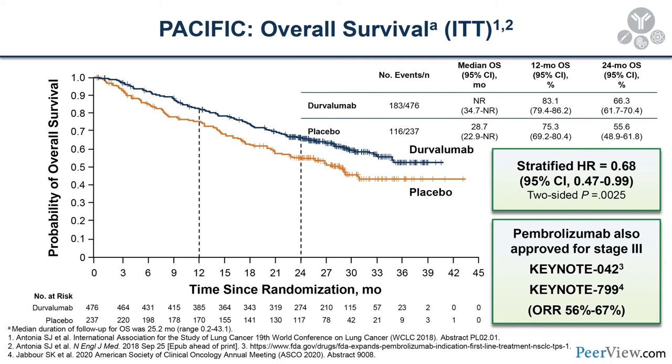I tend to think of stage 3 disease as resectable by pneumonectomy versus resectable by lobectomy, and move patients forward based on that algorithm. If pneumonectomy is needed, perhaps chemoradiation is the better route. The PACIFIC trial was really the first to advance immunotherapy into earlier-stage disease and show a clear benefit — definitive chemoradiation followed by adjuvant durvalumab. Patients receiving durvalumab had a significant survival benefit with a hazard ratio of 0.68.